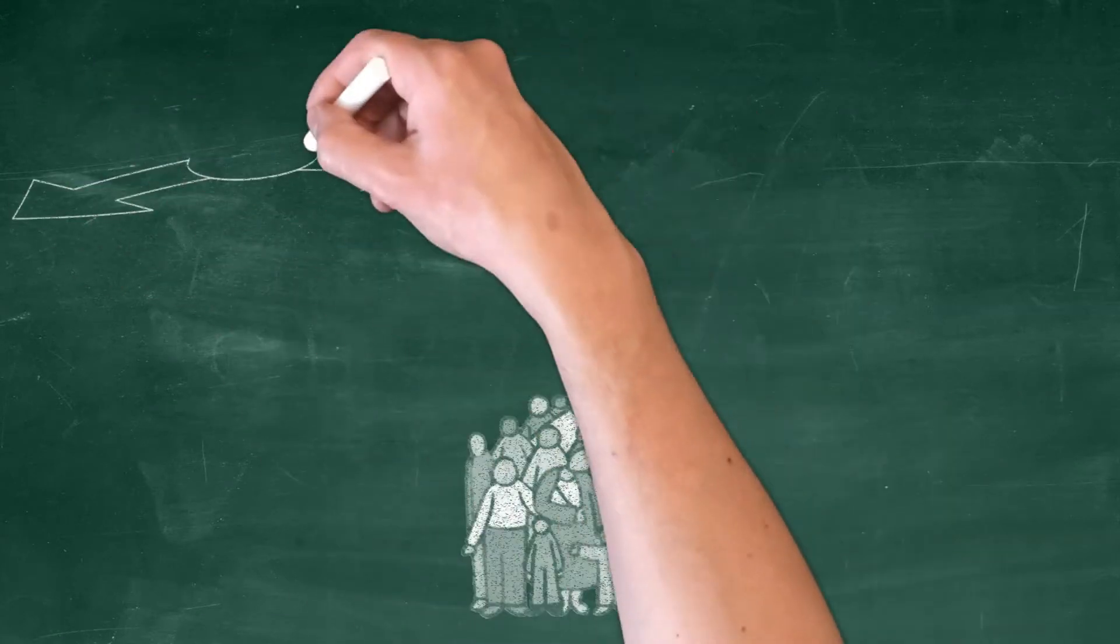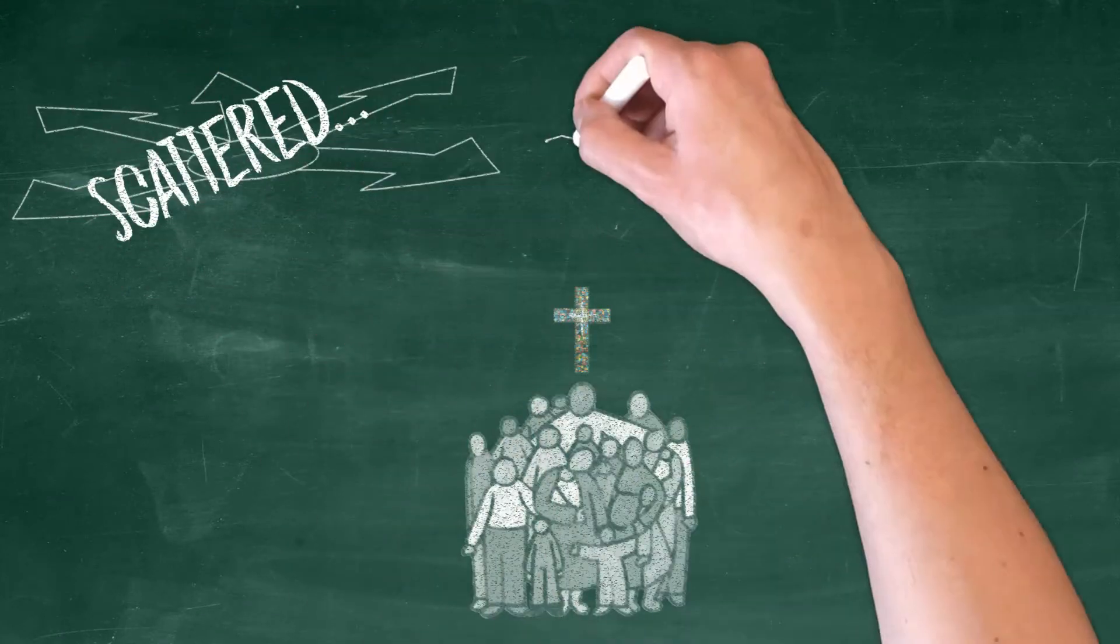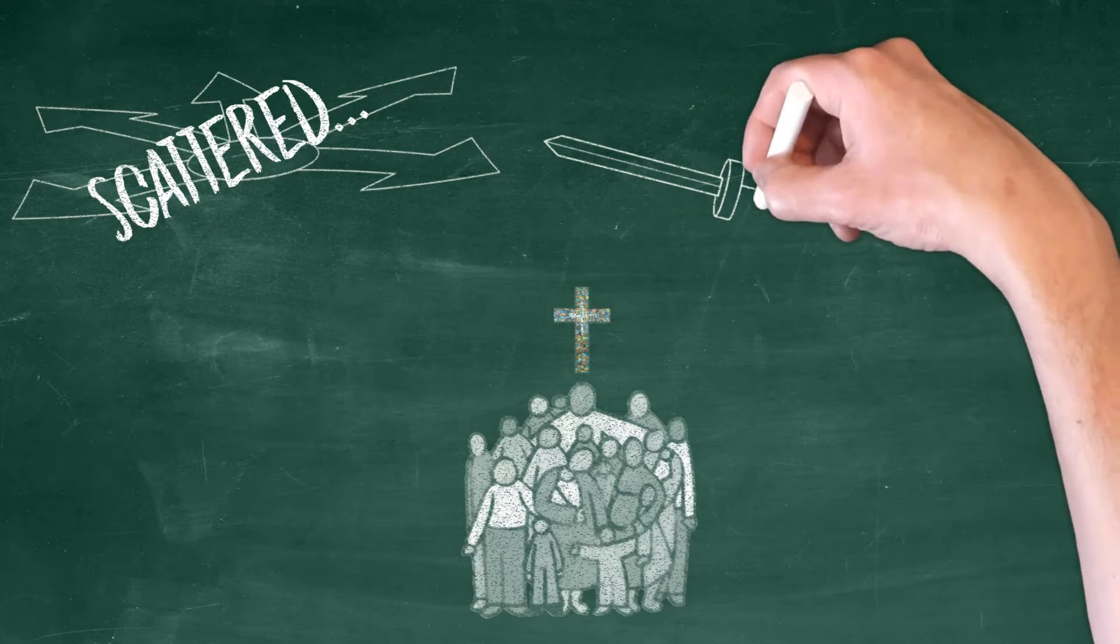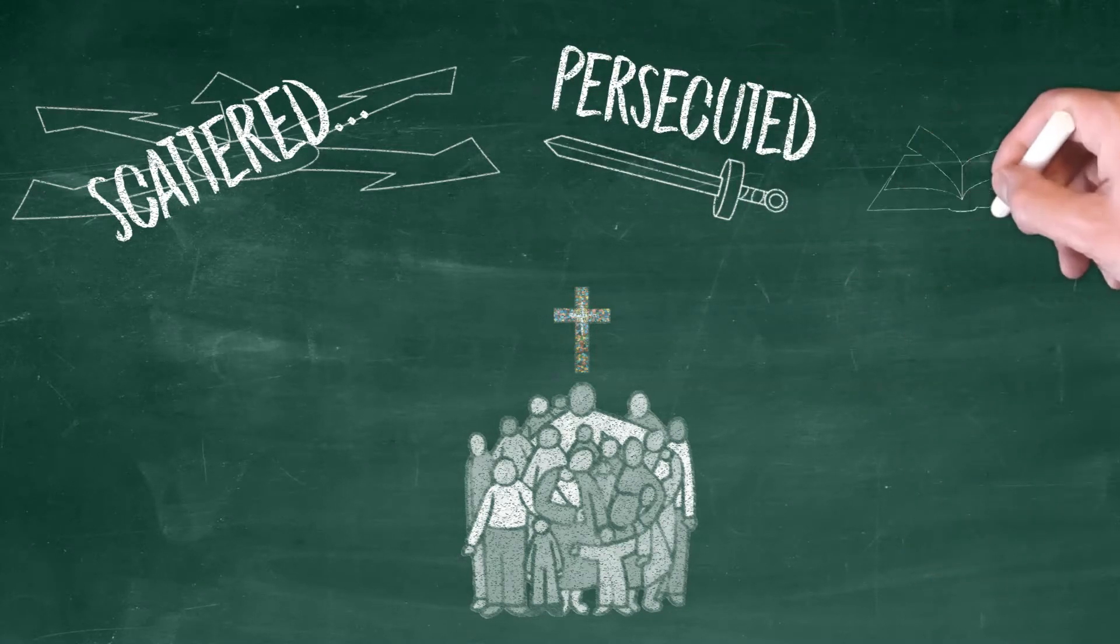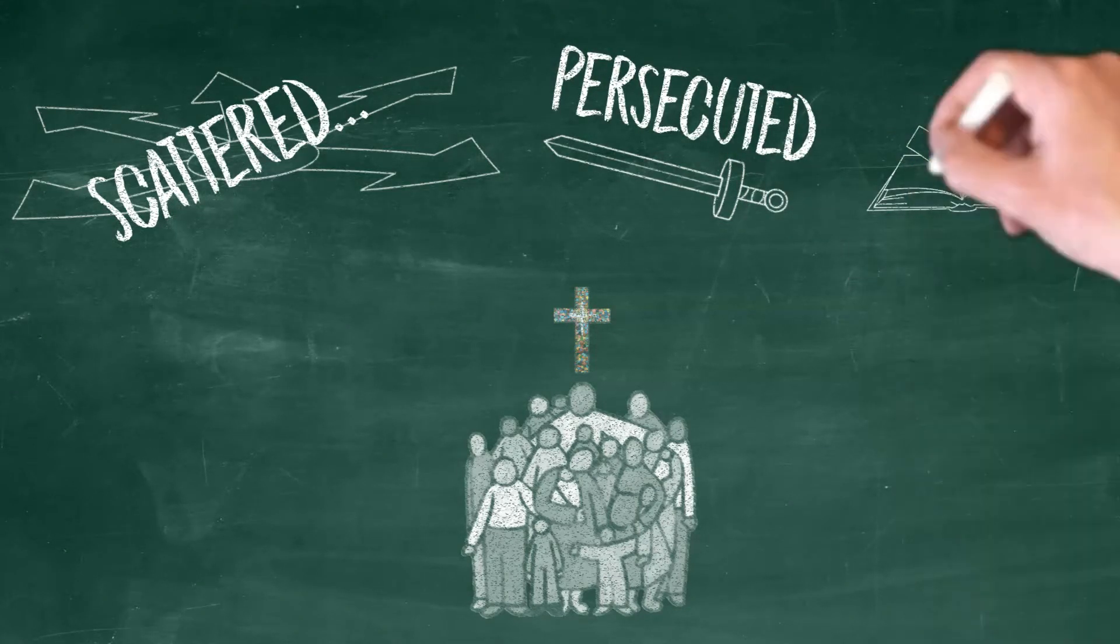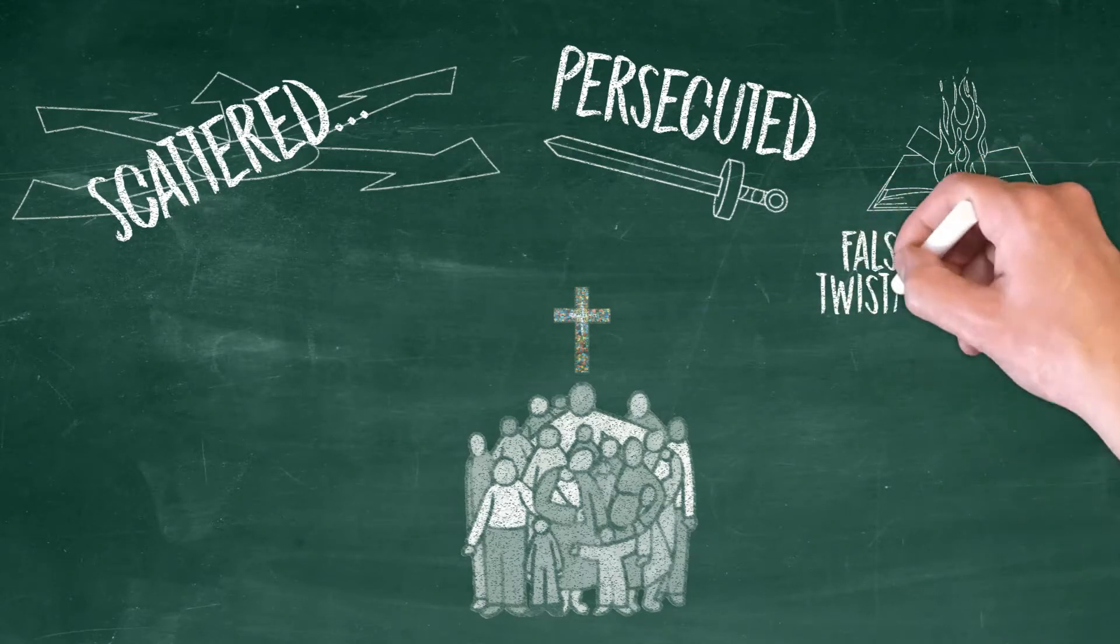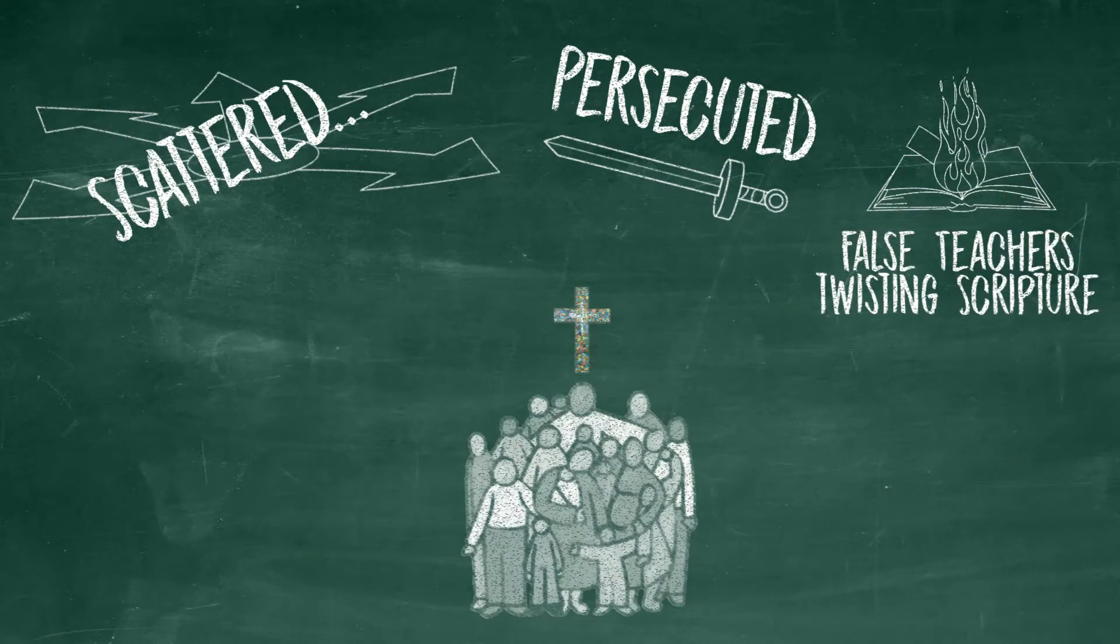I mean, their home city of Jerusalem was destroyed. Their leaders, the apostles, they were all killed off or eventually died. And church communities across the world were facing really heavy persecution for pretty much the first 300 years of their existence.